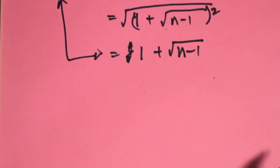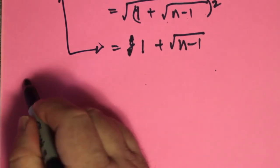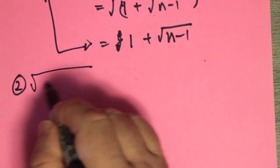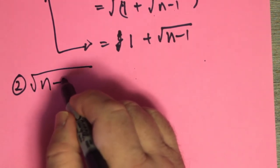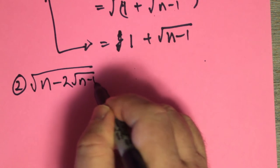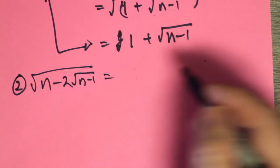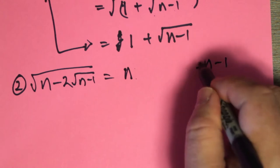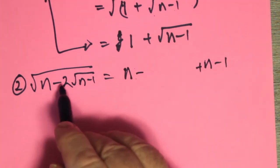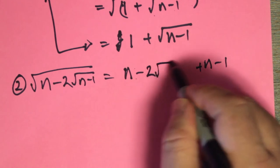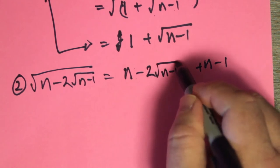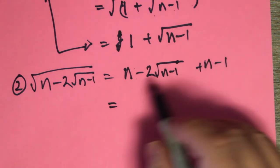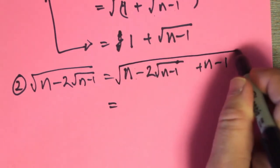Okay, second one is what about the square root of n minus 2 root n minus 1. These are very similar problems. So we have n and we have n minus 1 added together. And here we have a subtraction, 2 root n minus 1. And here we have, got to put that under a square root.